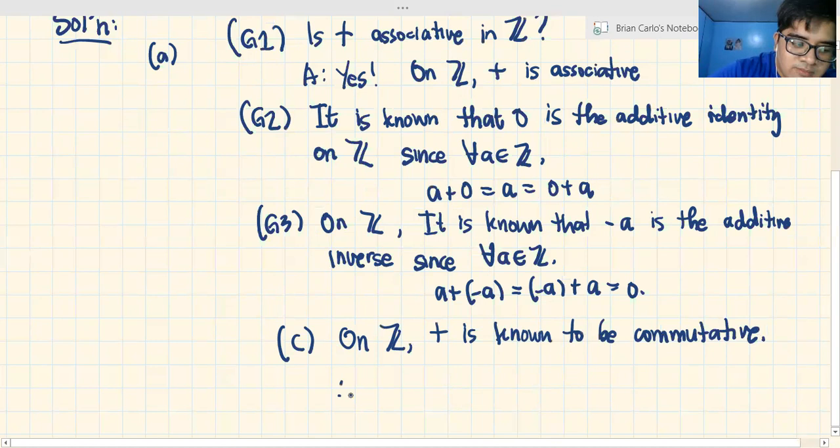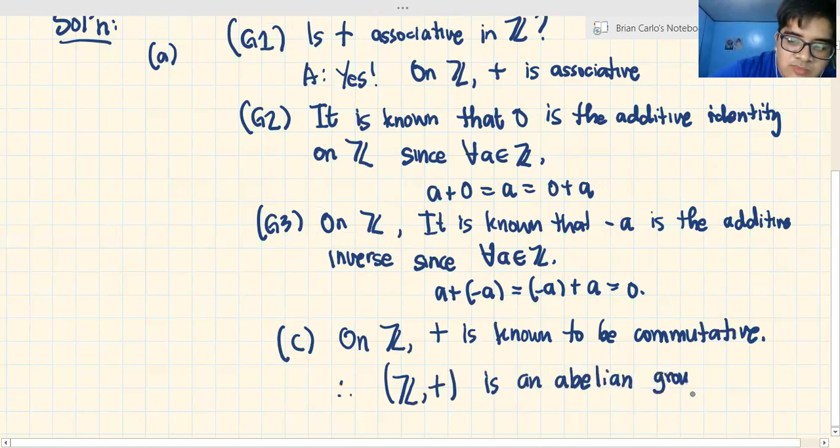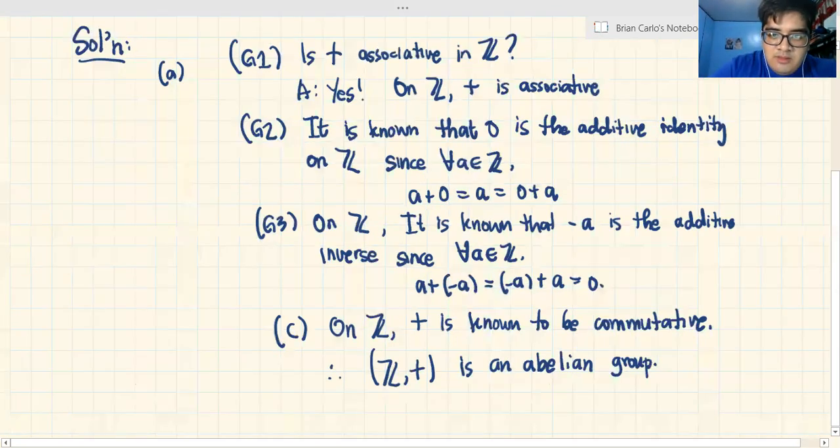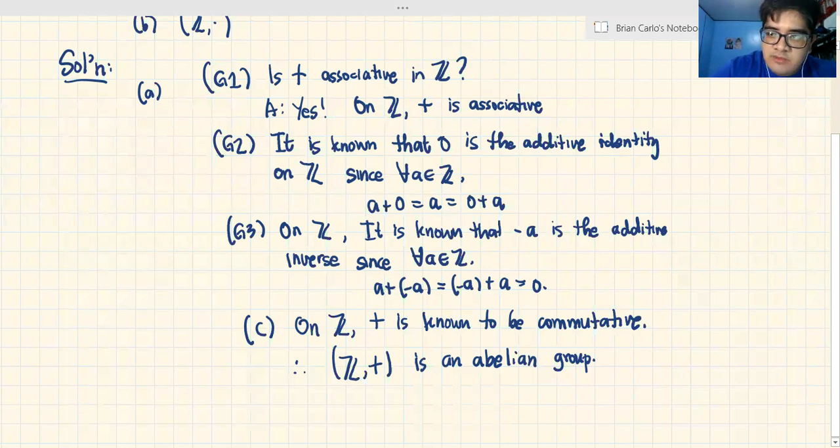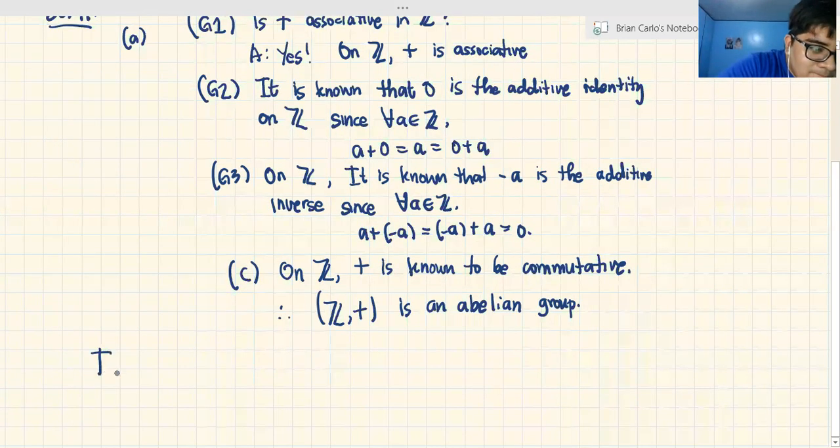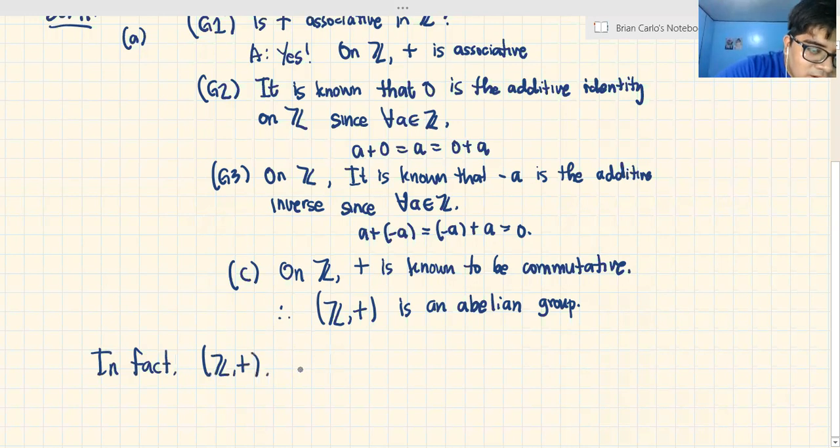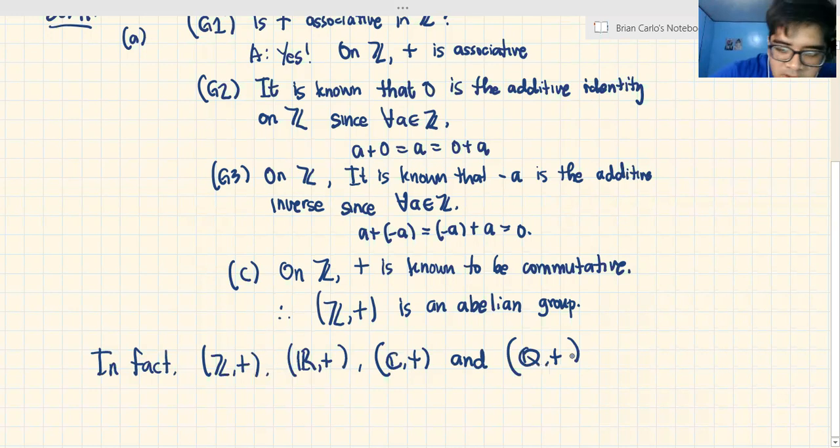But we know that one more condition: on Z, addition is known to be commutative. So, therefore, Z plus is an Abelian group. An Abelian group. You are an Abelian group because of those four properties that you satisfy. In fact, Z plus, R plus, C plus, and Q plus are all Abelian groups. And you can prove them by a similar matter above.